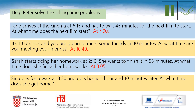What about the last one? Siri goes for a walk at half past eight and gets home one hour and ten minutes later. At what time does she get home? The correct answer is at twenty to ten. Excellent work — you are so good at riddles.